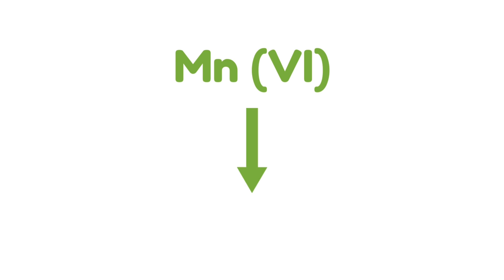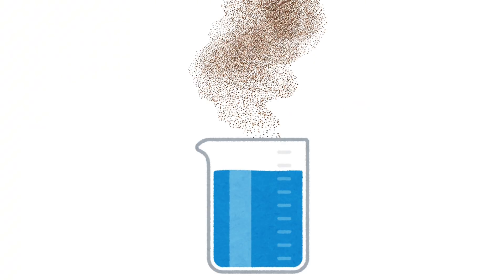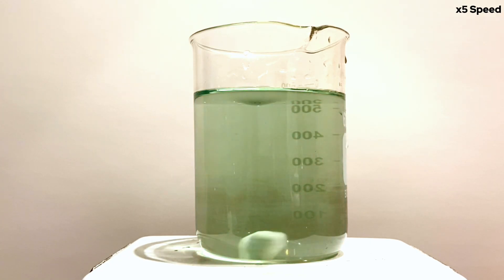Finally, this manganate further undergoes a disproportionation reaction leading to the formation of manganese dioxide, which when suspended in the water looks yellow. The disproportionation reaction also takes longer to form our MnO2, which kind of explains why the last step goes slower.